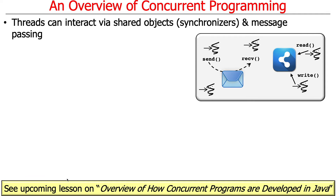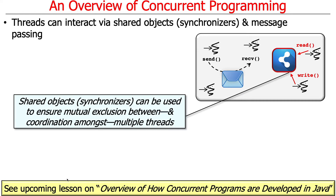Threads don't typically run in isolation. They interact with each other via shared objects, also known as synchronizers, and or message passing. Shared objects or synchronizers are typically used to ensure mutual exclusion between multiple threads and or coordination amongst multiple threads. Here's a simple example where a shared synchronizer lets threads take turns reading and writing, making sure reads and writes are properly synchronized so they don't cause race conditions.